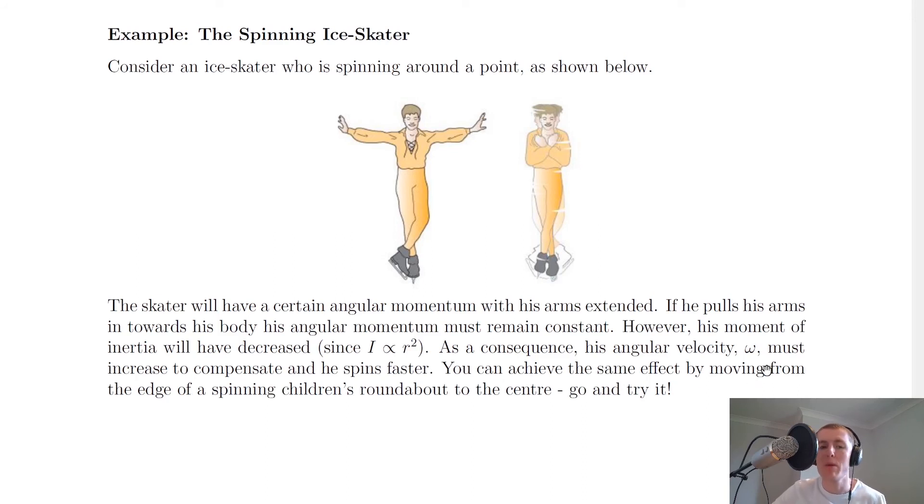You can also achieve the same effect by moving from the edge of a spinning children's roundabout to the centre. Go and try it if you want a bit of fun. You probably remember how scary it is to be in the centre of one of those roundabouts, where everything feels much faster compared to if you're out on the edge of the roundabout. And that's because your angular velocity has increased because your moment of inertia has decreased as you've gone towards the centre of that roundabout.